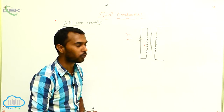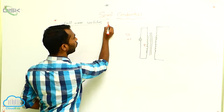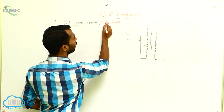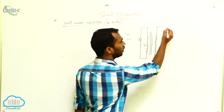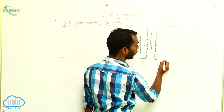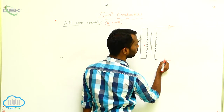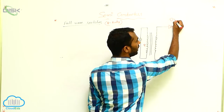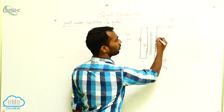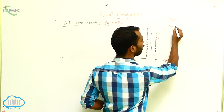How many diodes do we use in a full wave rectifier? We have to use two diodes. Here I'm using diode number one and here I'm using diode number two. This diode is named D1 and this diode is named D2. This is the secondary coil of the transformer.